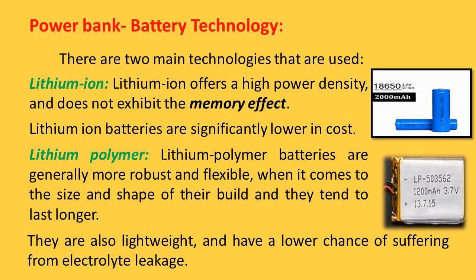Generally, 18650 3.7-volt lithium-ion batteries with varying capacities are found in power banks or battery banks.